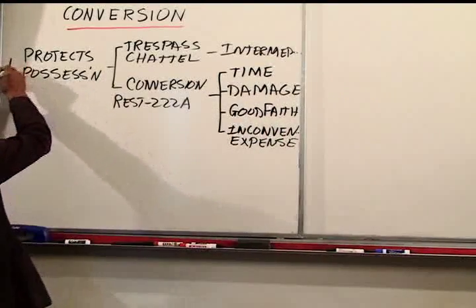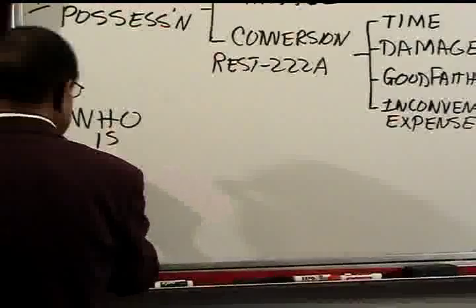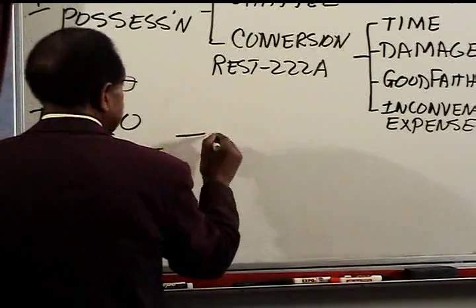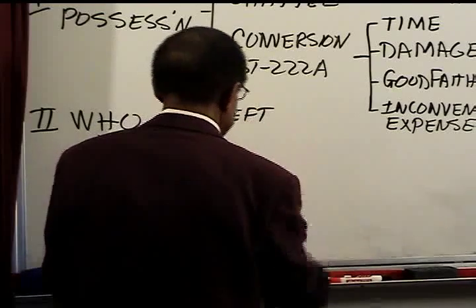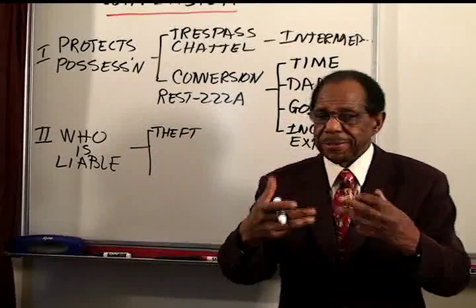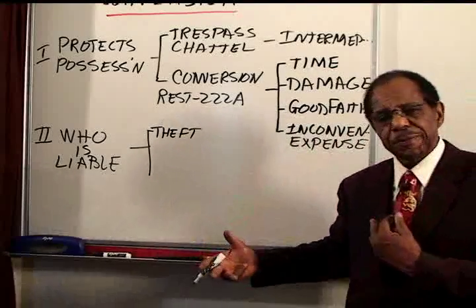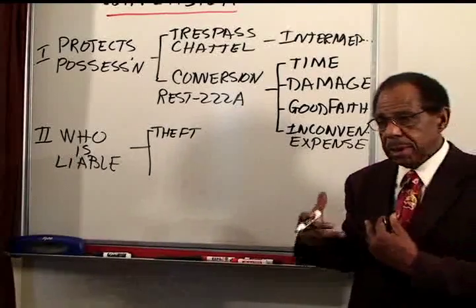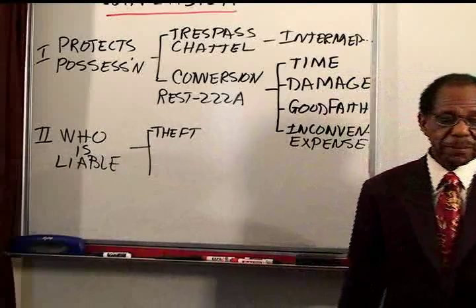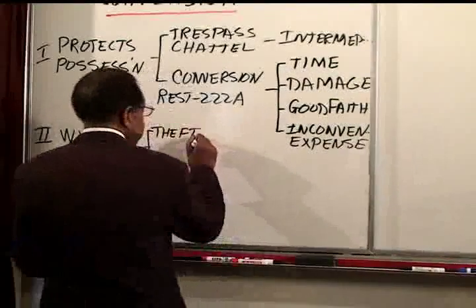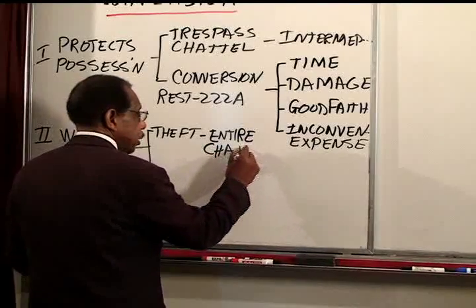Our next issue is who is liable. There are several cases to distinguish. First is the case of the thief: if I acquired your property by theft, I am the converter — you can sue me for conversion. But if there is a bona fide purchaser who buys the property from me, not knowing that I'm the thief, that bona fide purchaser — however innocent — is liable for conversion. All the people the property gets passed on to remain liable as converters. In the theft case, the entire chain remains liable.